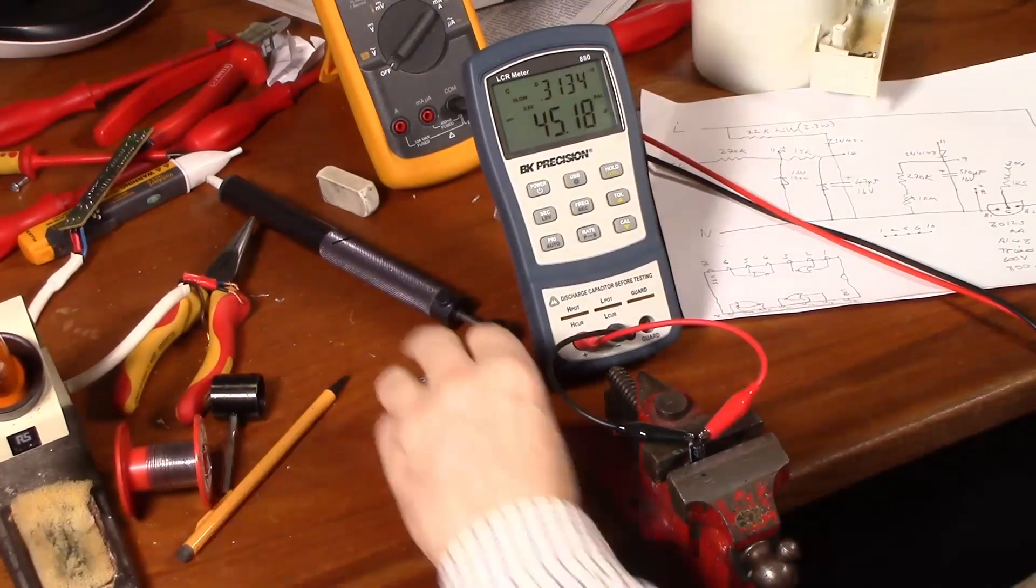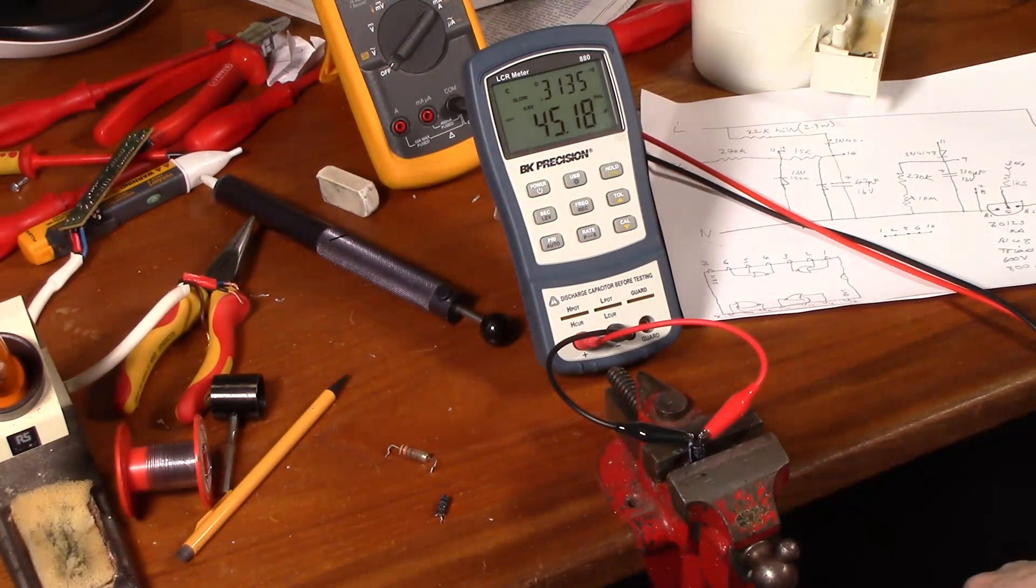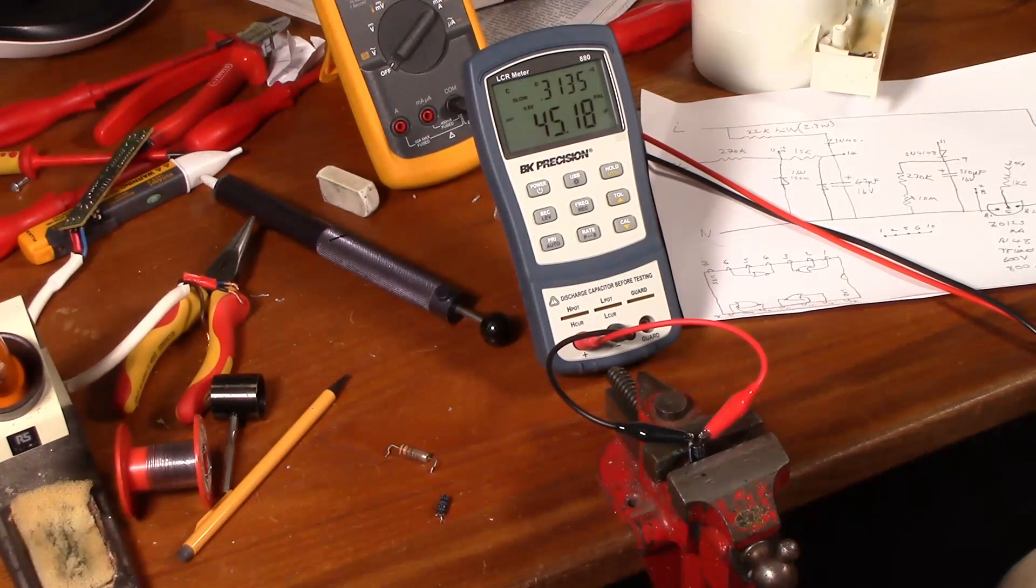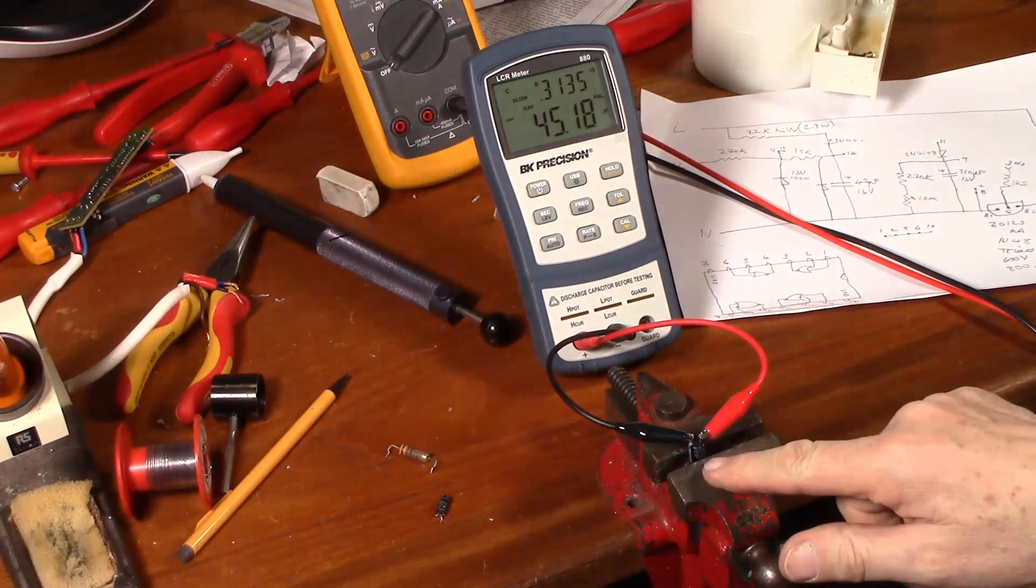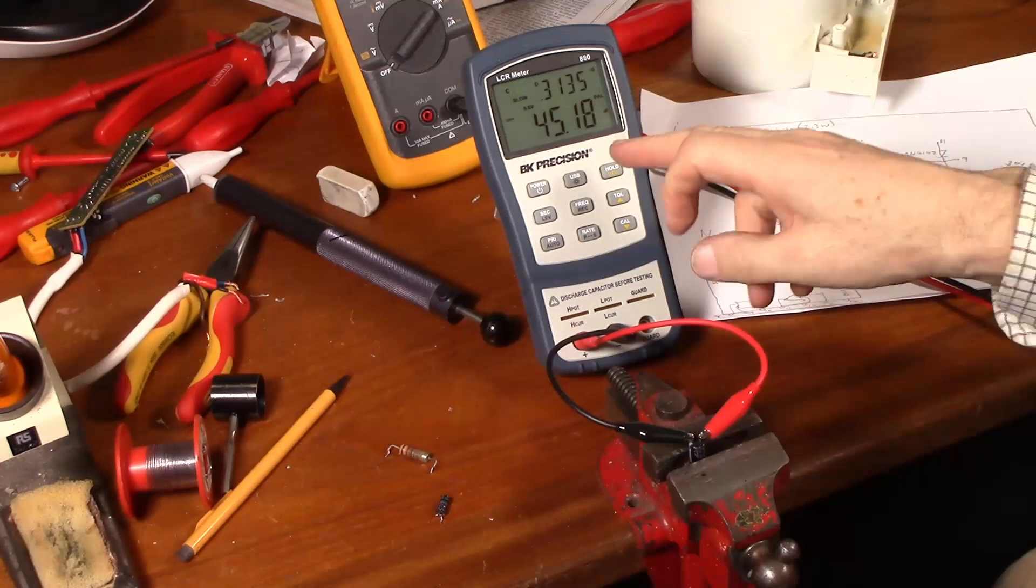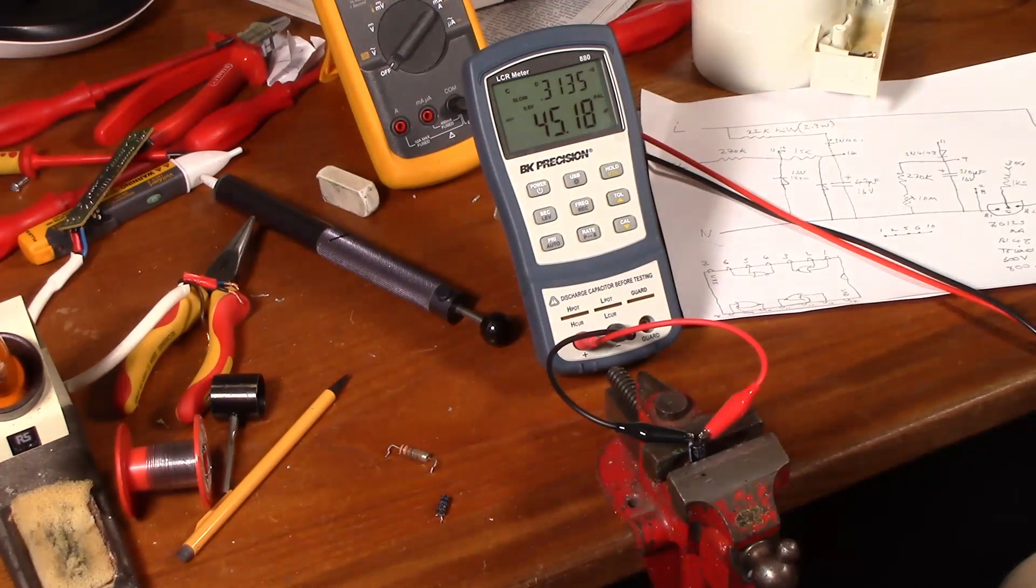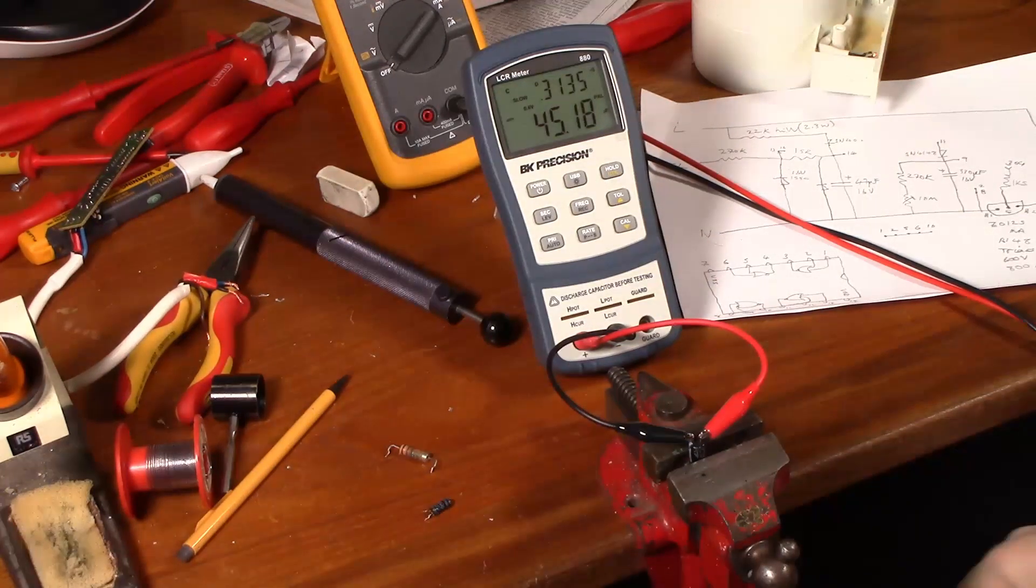Well, I took the two capacitors out and measured them. Neither of them are anywhere near what they say on the can. This is supposed to be 330uF and it's actually 45uF. The other one was similarly out. So we'll have to replace those anyway.